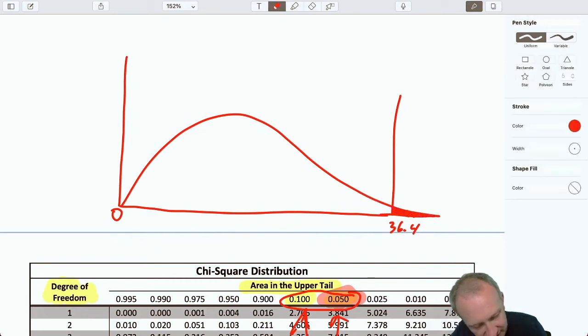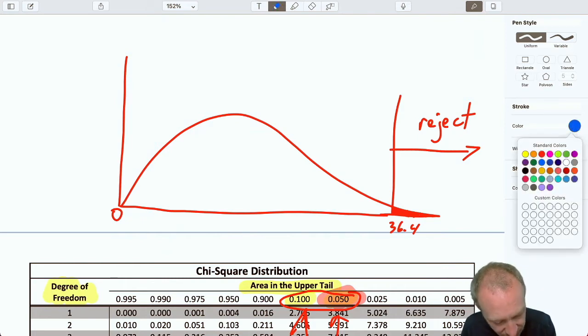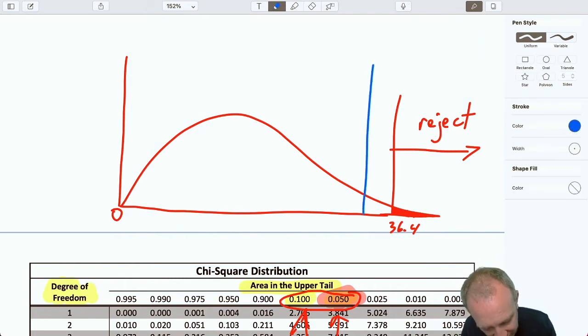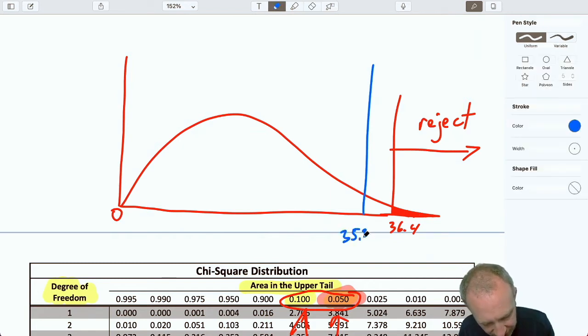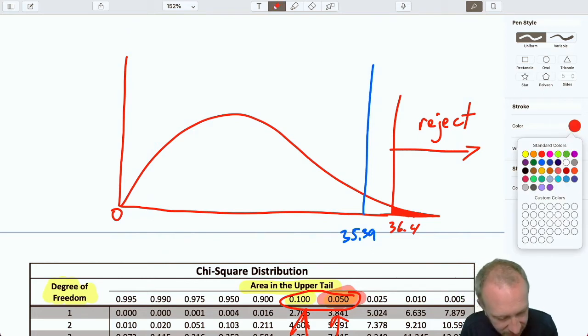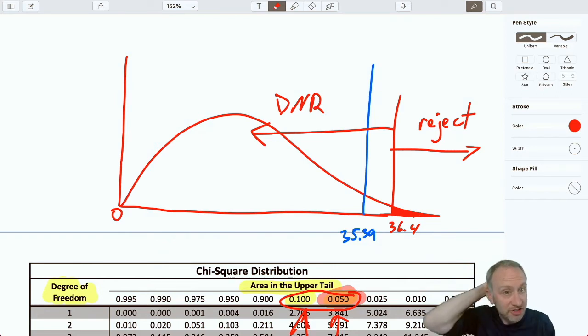Just like every other test that we've done, in terms of our rejection rules, that critical value defines that rejection space. We'll reject if our test statistic is greater than or equal to that critical value. Of course, our test statistic was here, was 35.39. It is not greater than or equal to. It was less than. So that falls into that do not reject space.